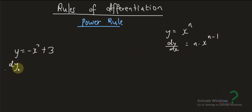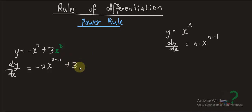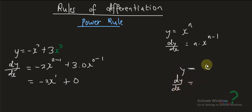So dy over dx, the derivative of this function, is going to be negative 2x, because this is 2 times x to the power 2 minus 1. If you look at the constant 3, we have x to power zero, and the derivative is 3 times 0 times x to power negative 1, which equals zero. So whenever y contains a constant, the derivative of a constant with respect to any variable is zero.